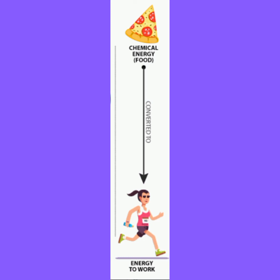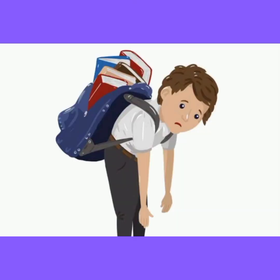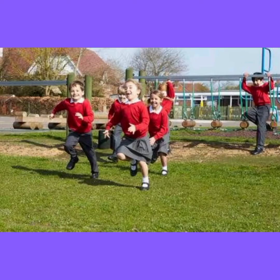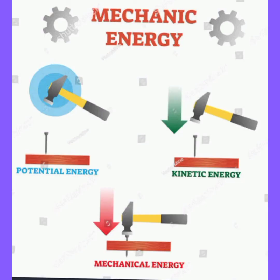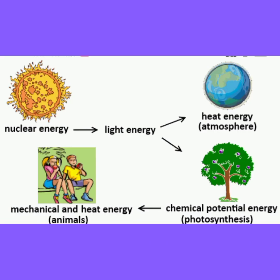When we eat food, the chemical energy of the food is stored inside our muscles. This chemical energy changes to mechanical energy when we do activities such as lifting heavy school bags, playing, and running in the playground. Mechanical energy is of two types: energy due to motion or movement is called kinetic energy, and energy due to position is called potential energy.